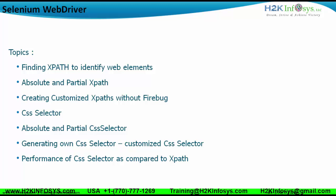XPath is nothing but the position or location of an object with respect to a web page. We will see what absolute and partial XPath are, and which spying tools can be used to get an absolute or partial XPath. Spying tools are used to spy on objects, and based on that we use locating strategies. We will also see that if the XPath thrown by the spying tools does not locate a web element, how do we create a customized XPath.